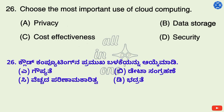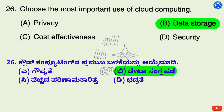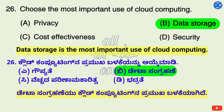Question 26. Choose the most important use of cloud computing — Options: A. Privacy, B. Data storage, C. Cost effectiveness, D. Security. Right answer is B: Data storage. Data storage is the most important use of cloud computing.